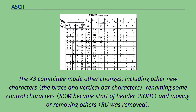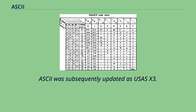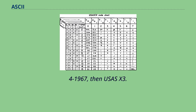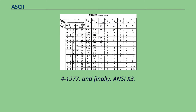The X3 committee made other changes, including new characters, renaming some control characters, and moving or removing others. ASCII was subsequently updated as USAS X3.4-1967, then USAS X3.4-1968, ANSI X3.4-1977, and finally ANSI X3.4-1986.